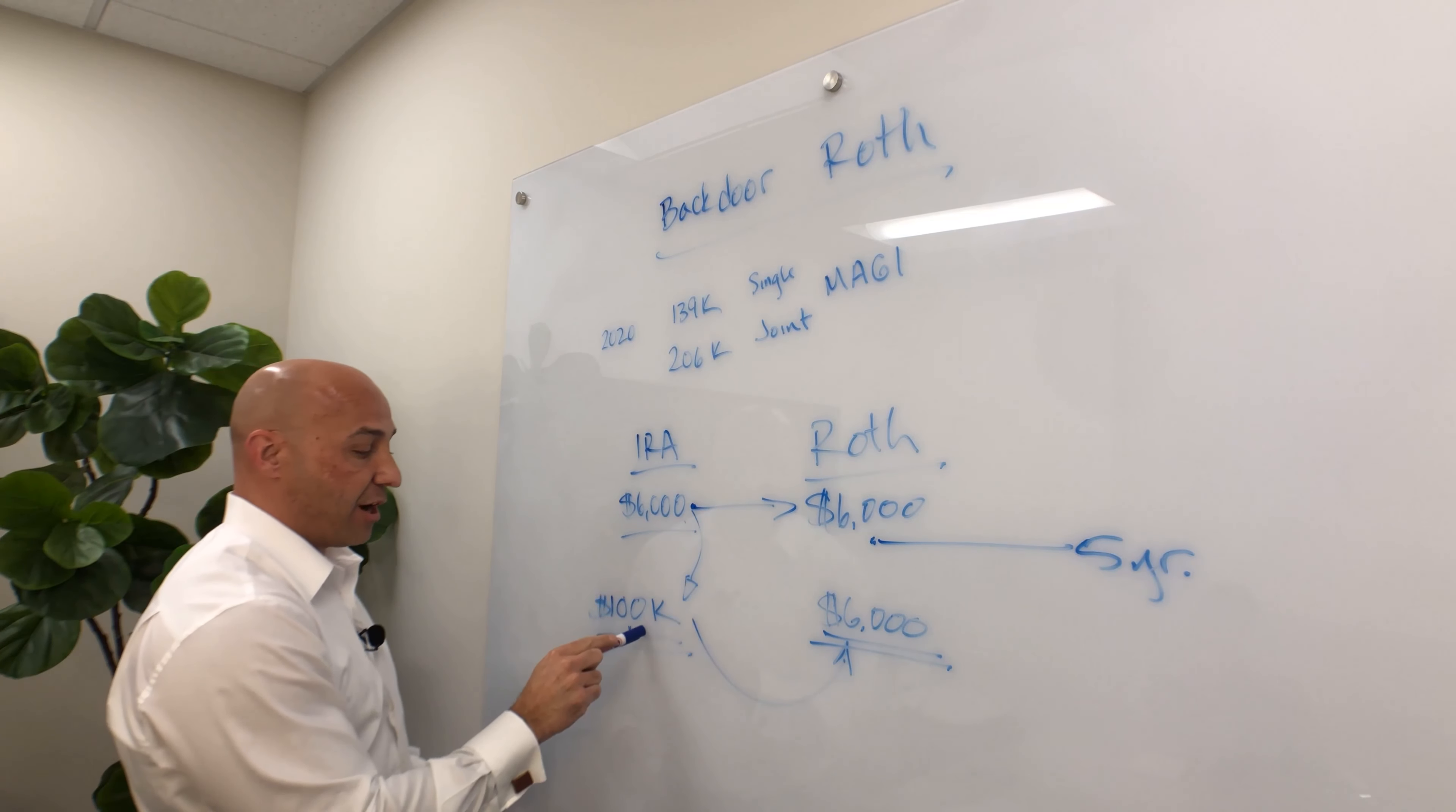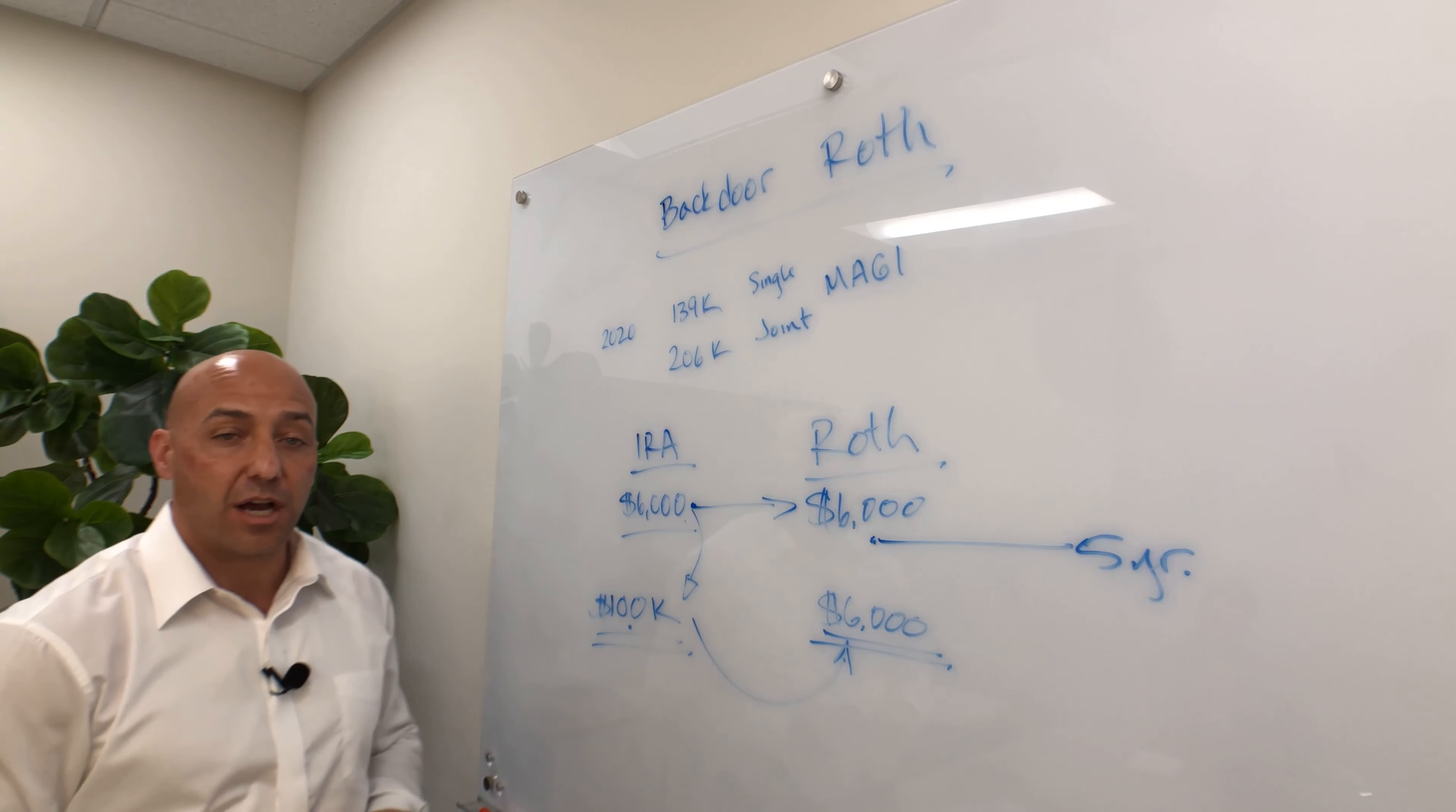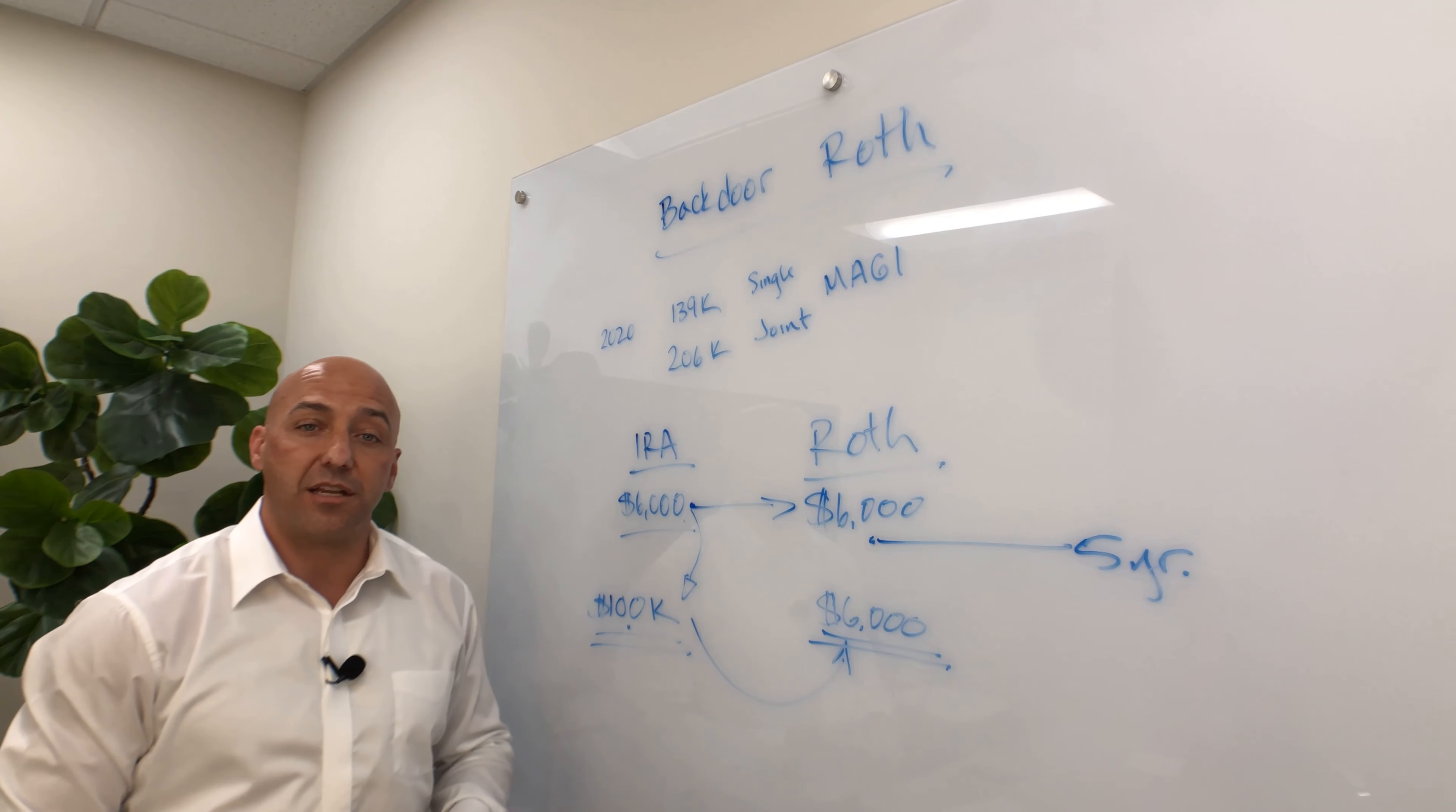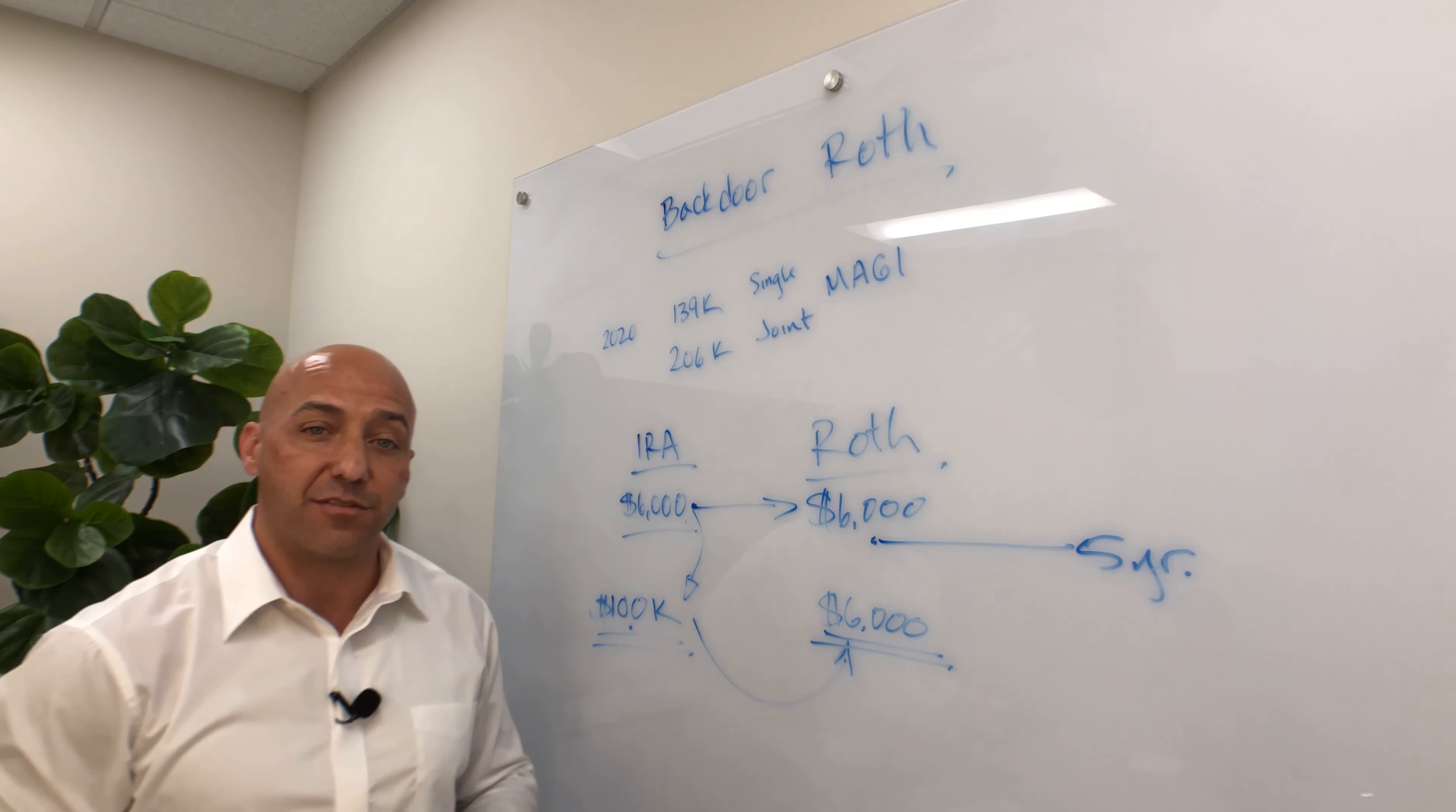So a lot of times, if we already have an existing IRA, we might not even attempt to do the backdoor Roth because this is not a tax-free contribution to the Roth IRA. Maybe we do, maybe we don't. This is where it gets a little bit complicated, and you want to discuss it with a professional before you make any of those moves. But something to keep in mind that if you have an existing IRA, it's not as clean as the way I explained it the first time.